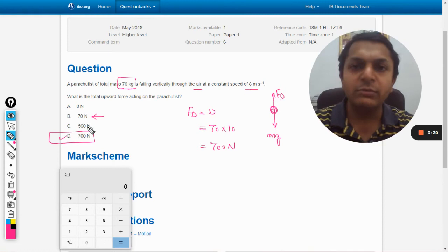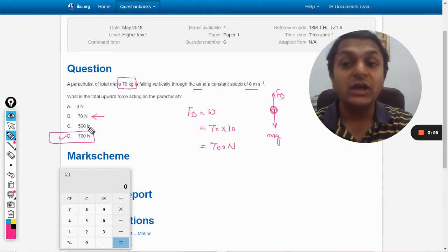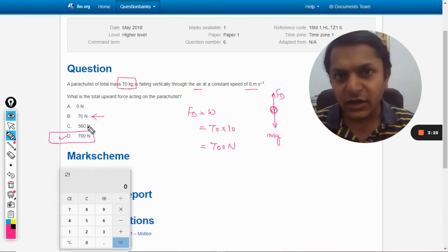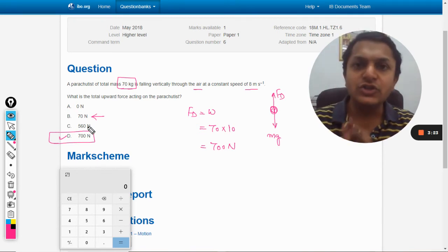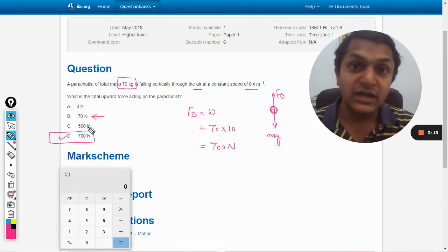Be very cautious because option B is 70 Newton. You may take 70 Newton in a hurry, but that is wrong because the unit of force has to be there. kg is the unit of mass and Newton is the unit of force, so it has to be 700 Newton.